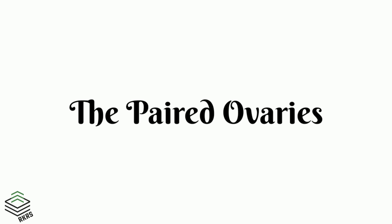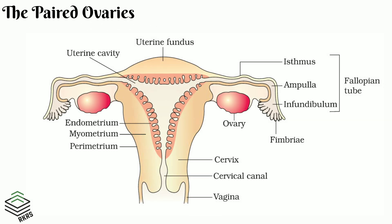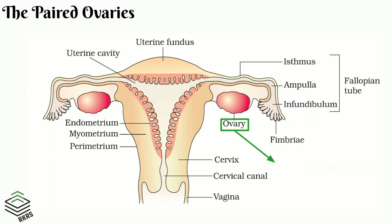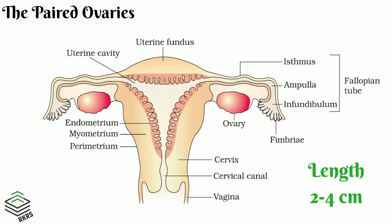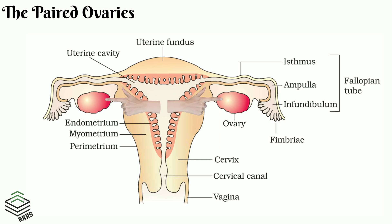First we are going to learn about the paired ovaries. The ovaries are considered the primary sex organ because they produce the female gamete, that is the ovum, and steroid ovarian hormones such as estrogen and progesterone. They are located in the lower abdomen on either side of the uterus, in the pelvic region.